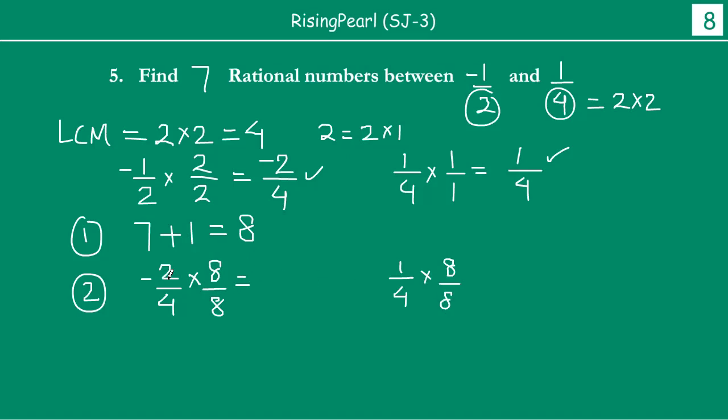The second step of the two-step technique: each of the two numbers, -2/4 and 1/4, we write them and multiply numerator and denominator by the number obtained in step 1, which is 8. 2 times 8 is 16, so -16, and 4 times 8 is 32. Similarly, 1 times 8 is 8, and 4 times 8 is 32. So we got new fractions: -16/32 and 8/32.